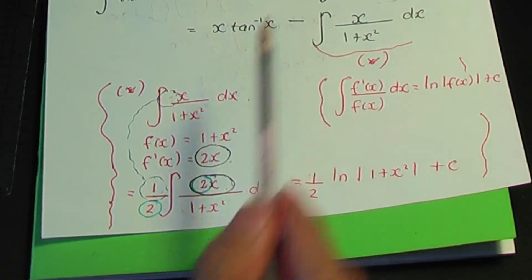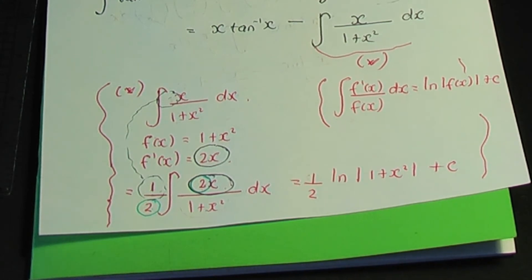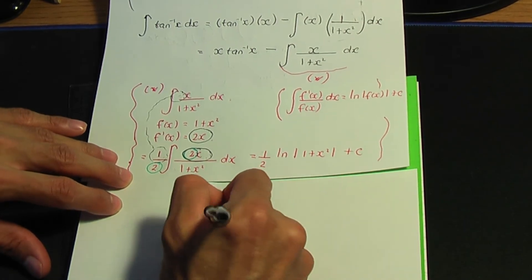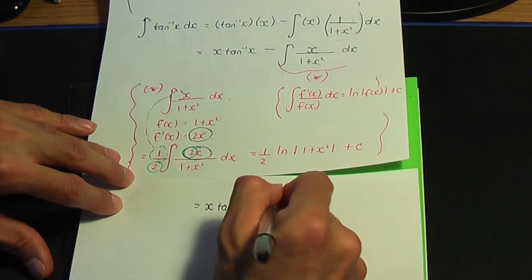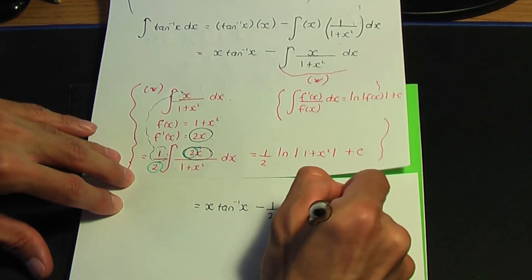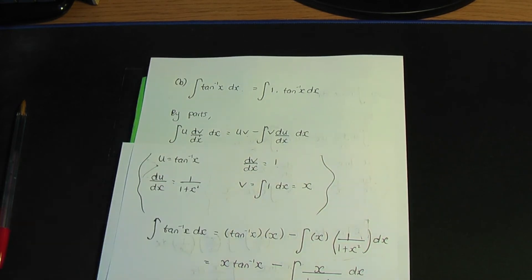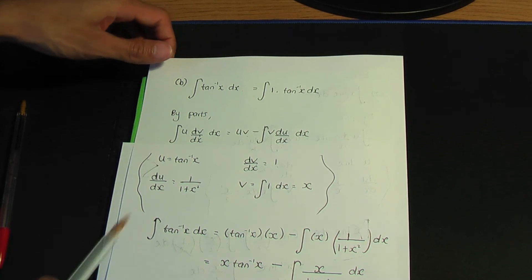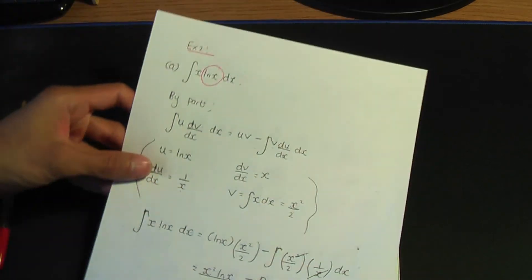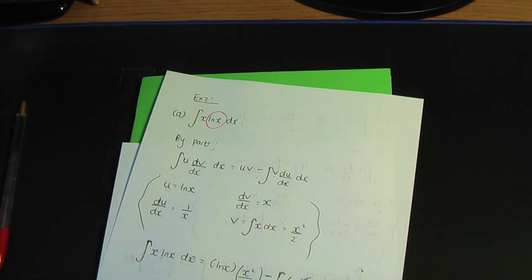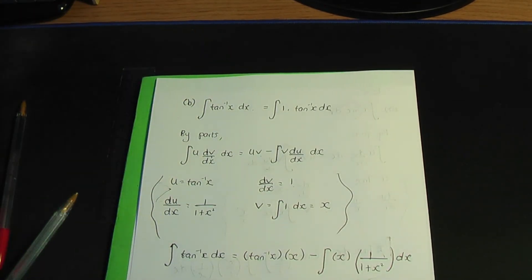So the final answer is: x tan inverse x minus 1/2 ln|1 plus x²| plus c. That is the final solution for the integral of tan inverse x with respect to x. Remember: whenever you encounter a special case — integrating an inverse trig function or a natural logarithm — think about by parts, and always take u to be the ln term or the inverse trigonometric term.